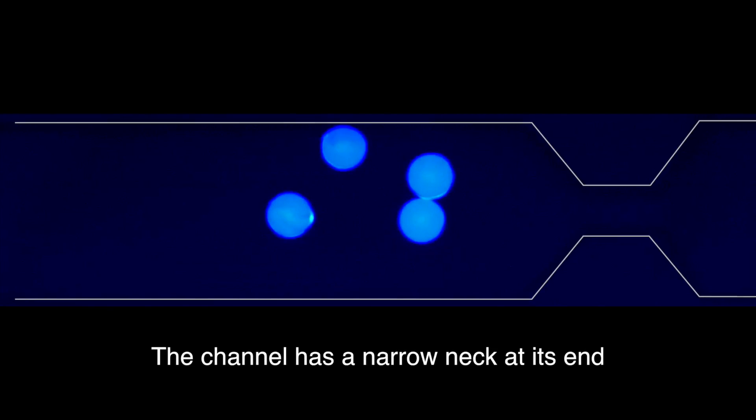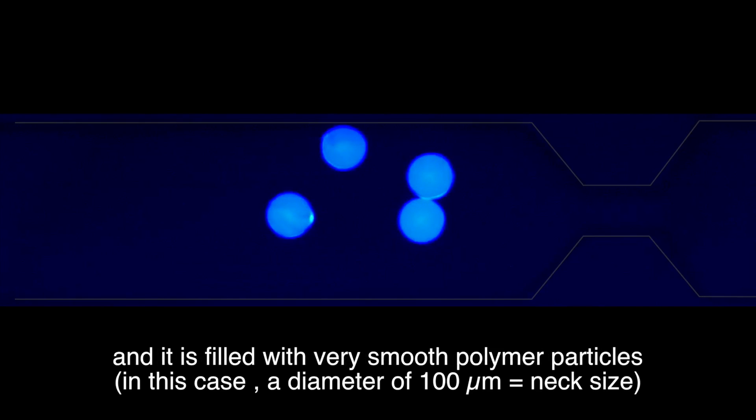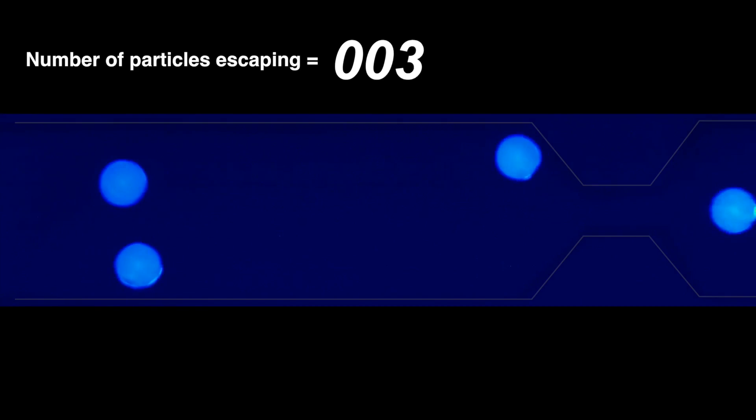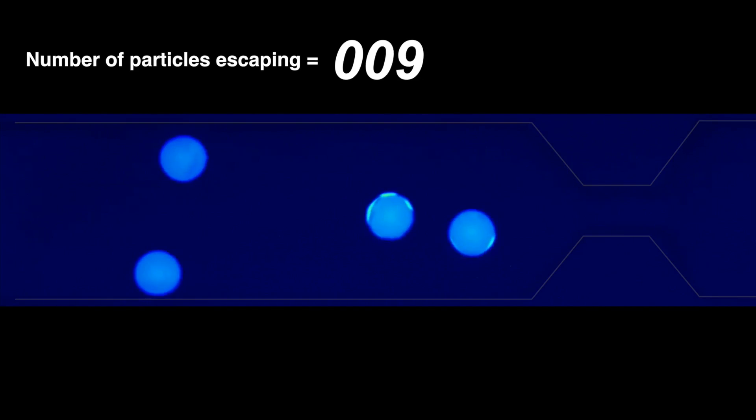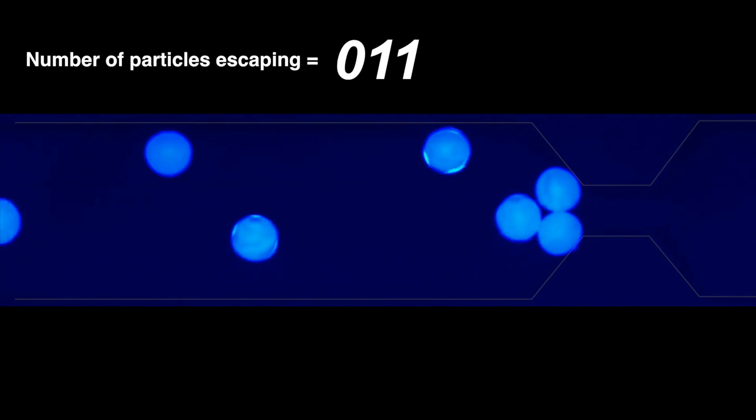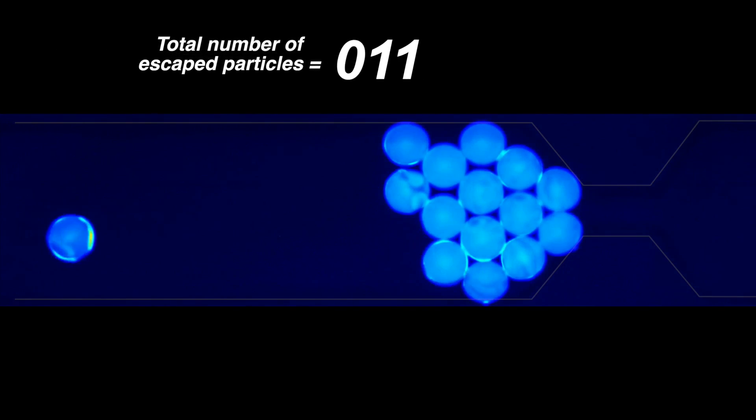So here's what we're going to do. We fill a microfluidic channel that has a narrow neck at its end with water and we add a few particles that actually don't stick to each other or to the walls. We push the liquid very slowly, dragging the particles along and we count how many particles escape before a clog occurs.